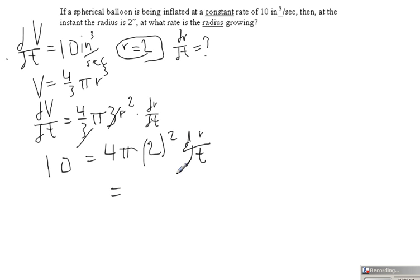And we can then solve for dr/dt. So we're going to have 10 over 16 pi equals dr/dt. So the radius is changing at a rate of 5 eighths pi inches per second.